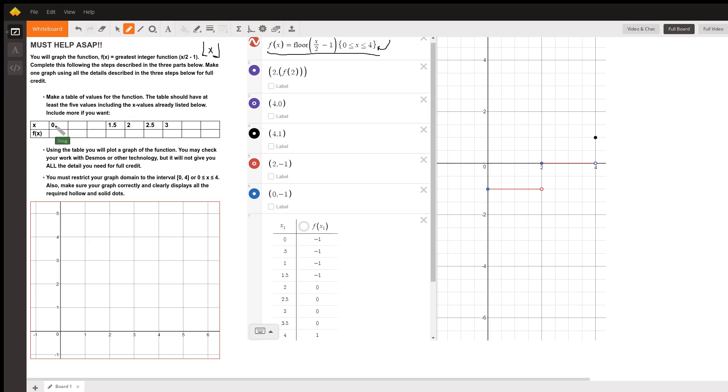So, if you put 0 in for x into this function, 0 divided by 2 is 0, minus 1 is minus 1. The greatest integer that's less than or equal to minus 1 is minus 1. So, here's 0, minus 1 right here. So, we could put a minus 1 here.